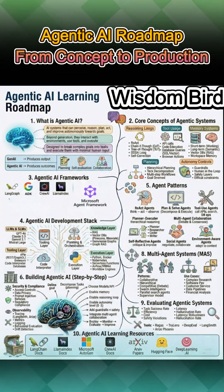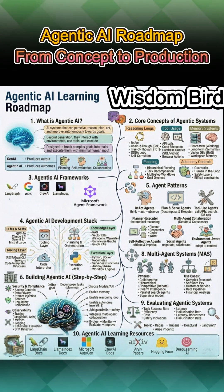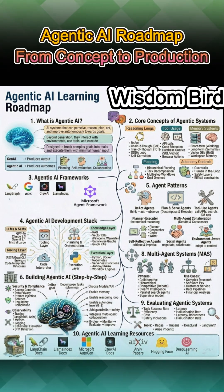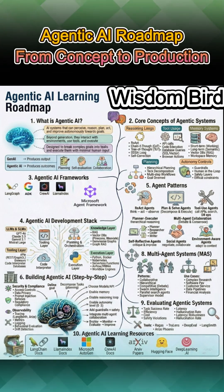Tools like RAGAZ, TrueLens, DeepEval, LangSmith, and ArisePhoenix help you measure what actually matters. This roadmap is your curriculum, from concept to production-ready agentic systems. No fluff. No just prompt-it nonsense. Just architecture, systems thinking, and execution. If you're serious about building outcome-driven AI, this is where you start.